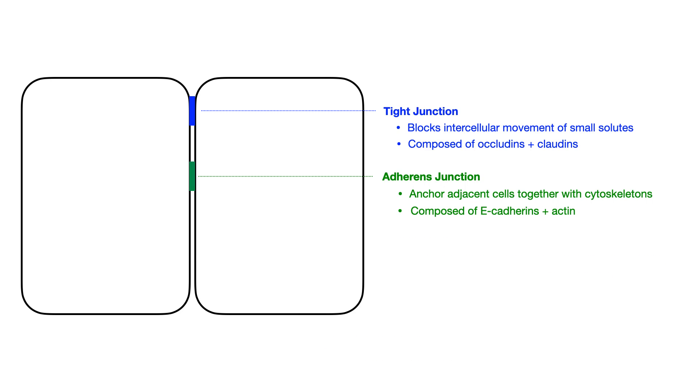Next, let's talk about two very similarly related junctions: desmosomes and hemidesmosomes. Both of these structures provide structural support via intermediate filaments. Desmosomes are specifically composed of interactions between cytokeratin and desmoplakin, whereas hemidesmosomes connect keratin to the basement membrane. Clinically, these are really relevant when it comes to differentiating two very high-yield dermatologic conditions: bullous pemphigoid, shown in blue on the left, and pemphigus vulgaris, shown in red on the right.